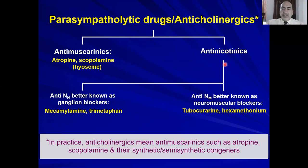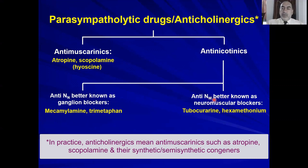Antinicotinics are further subclassified. Nicotinic receptors are present in four locations, but the two most important are the nicotinic receptors in the autonomic ganglia (called NN) and in the motor end plate at the neuromuscular junction. Anti-NN drugs are better known as ganglion blockers, with examples including mecamylamine and trimethaphan. Drugs that inhibit acetylcholine at the neuromuscular junction are called neuromuscular blockers and include tubocurarine and hexamethonium.